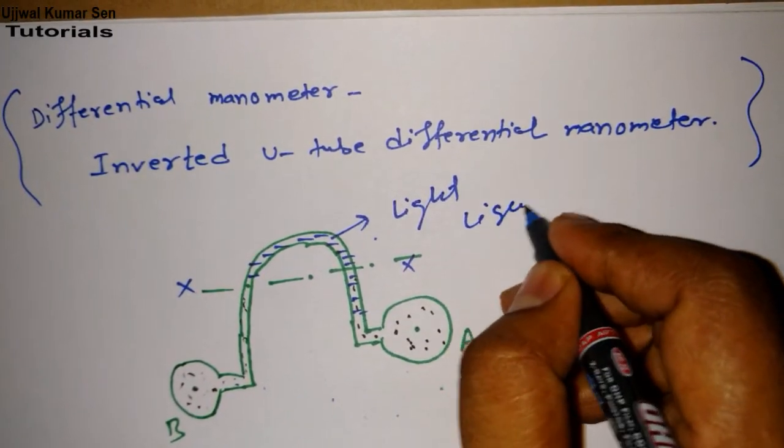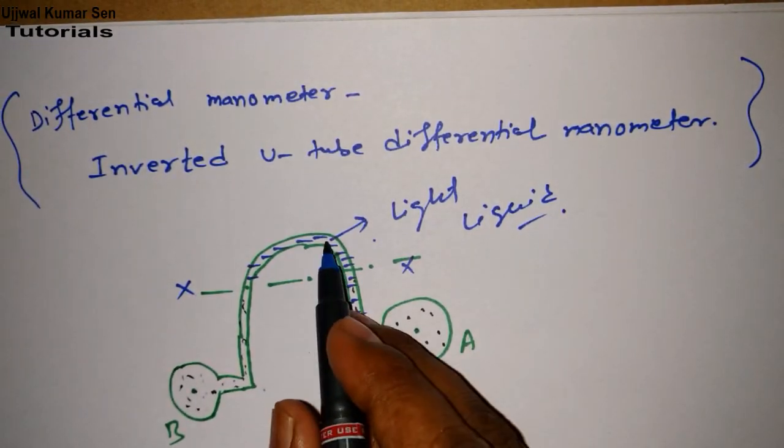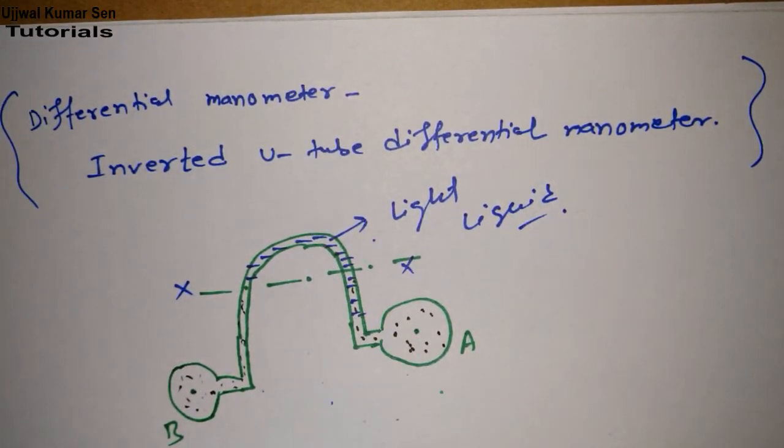Here we have light liquid. Remember this thing - this is really important. Light liquid would be on the top because if something has less density, it will be on the top. A simple concept.